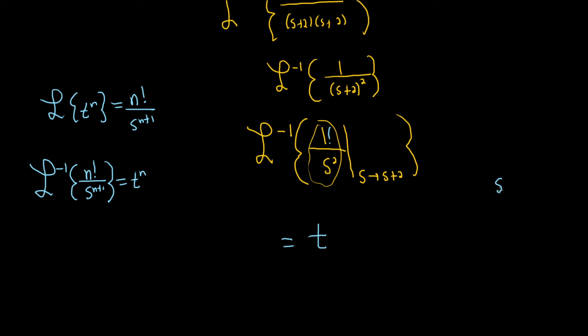It does. So because we're going from s to s minus negative 2 we're gonna get an e to the negative 2t and that would be the final answer.